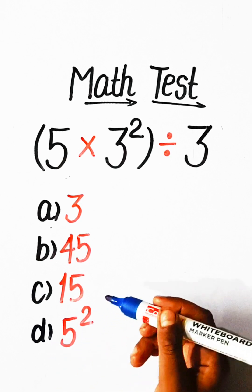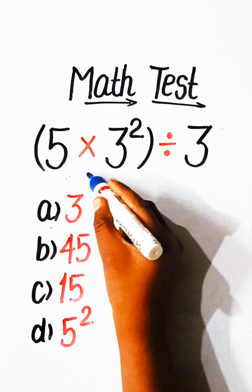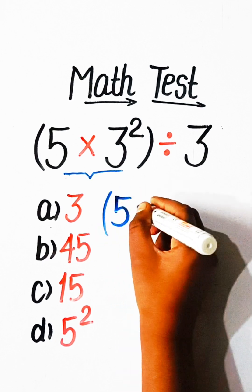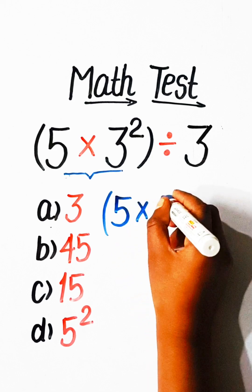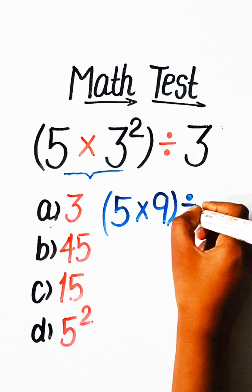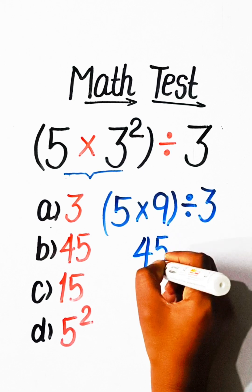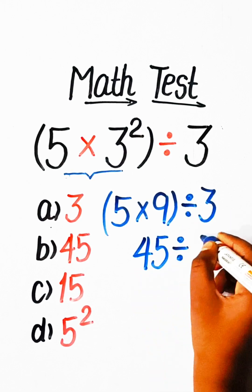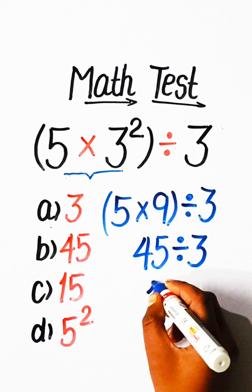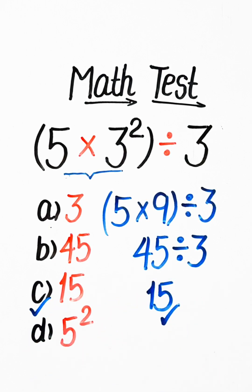In order to solve this, we have to solve the bracket part first. So we write 5 multiplied by 9 — because 3 squared is 9 — divided by 3. 5 times 9 is 45, divided by 3 is 15. So Option C, 15, is our correct answer.